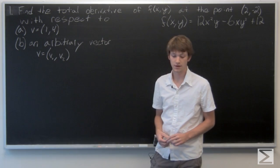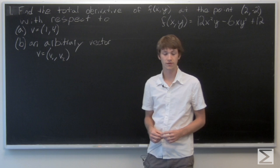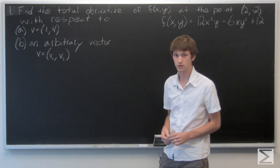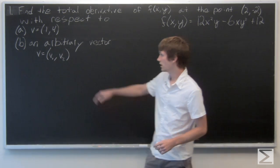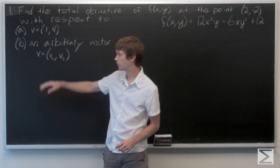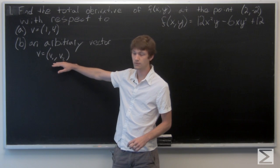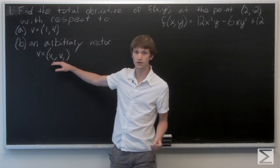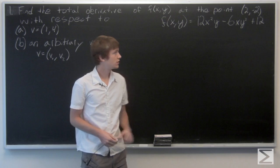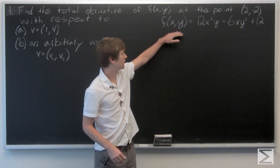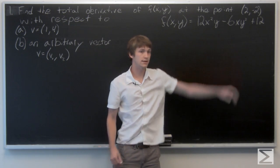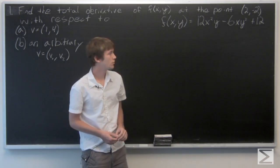In this problem, we're asked to find the total derivative of a given function at a point with respect to a given vector. For part a, we're given a vector (1, 4), and for part b, we're going to find it with respect to an arbitrary vector (v1, v2). The given function is f(x,y) = 12x²y - 6xy² + 12.